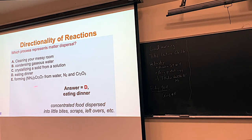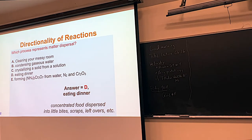Ammonium dichromate is an orange solid. When that reacts in a so-called volcano reaction, it makes a whole bunch of other things — a concentrated version becoming a more dispersed version. If you see matter dispersal or energy dispersal, the reaction is much more likely to occur.